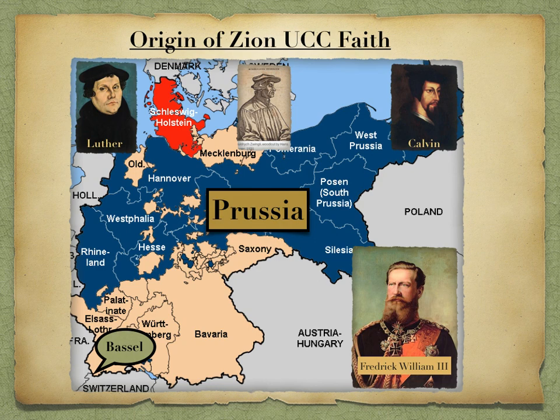The king, a Reformed Christian, lived in a denominationally mixed marriage with a Lutheran queen, Louisa, from 1776 to 1810, which is why they never partook of communion together. After this new edict, they could take communion together.